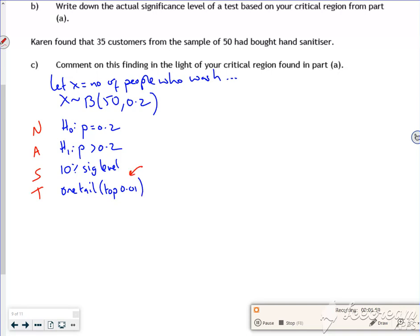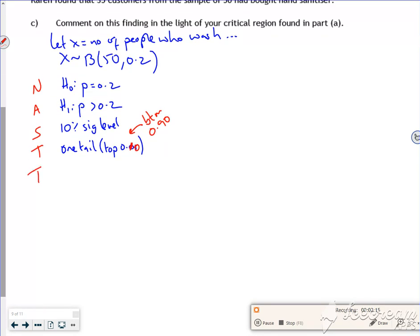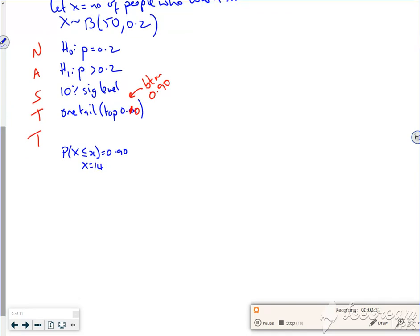And it's the top 0.10. So in terms of the inverse binomial, I'll look at the bottom 0.90 there. In terms of the tests, that's that bit there. So I can find the critical region now. So I want the probability that X is less than or equal to X equals 0.90. Now that should give me 14. So then I have to check for greater than 14 and greater than 15, because it's a one tail going to the right.